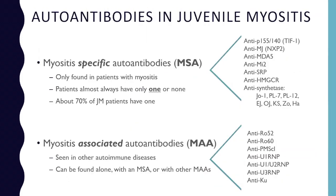There are a lot of different autoantibodies that we see in juvenile myositis, and they can be broken down into two types. Those that are specific to this disease are called myositis-specific autoantibodies, or MSAs. These are autoantibodies that are only seen in patients with myositis — no other diseases. Patients almost always only have one or none, and they're present in about 70% of kids with myositis.